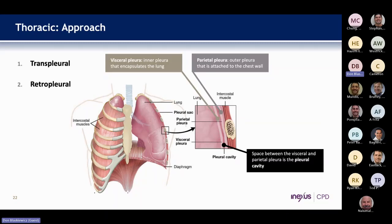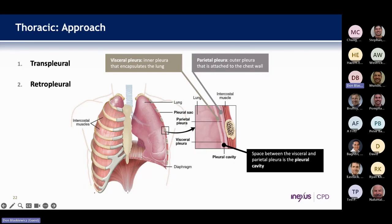For the thoracic approach, there's transplural and retropleural. By all means possible, I try to go retropleural. The pleural space has the parietal pleura — the outer pleural attachment to the chest wall — and the visceral pleura, with the pleural cavity in between. Our goal is to dissect the parietal pleura off the chest wall so we can stay out of the chest and avoid needing a chest tube.